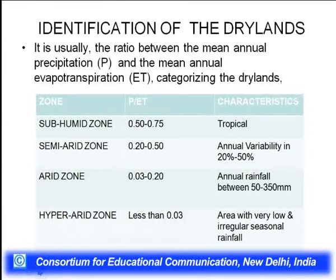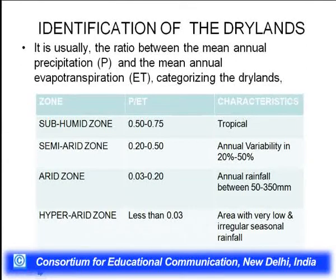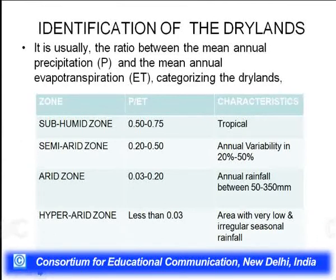It is appropriate to identify drylands by the ratio between annual precipitation and mean annual evapotranspiration. The subhumid zone has a ratio of 0.5 to 0.75, semi-arid 0.2 to 0.5, arid zone 0.03 to 0.20, and hyperarid zone is less than 0.03. In the arid zone, annual rainfall variability ranges from 50 to 350 millimeters, and the hyperarid zone has very low and irregular seasonal rainfall.